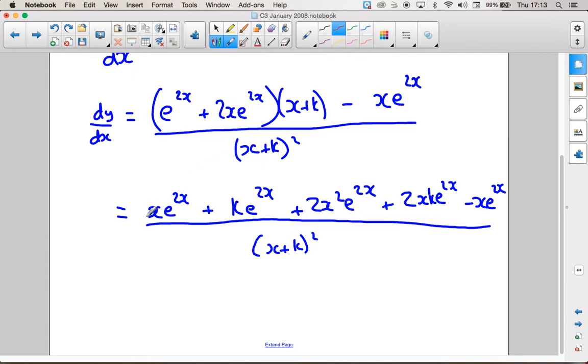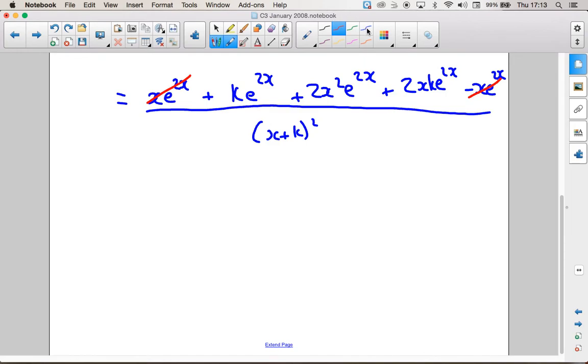Now, the first thing I spot is that these xe to the 2x terms will cancel. And everything has an e to the 2x in it. So if we take that e to the 2x out, what have we got left? We've got a k, we've got a plus 2x squared, and we've got a 2kx.